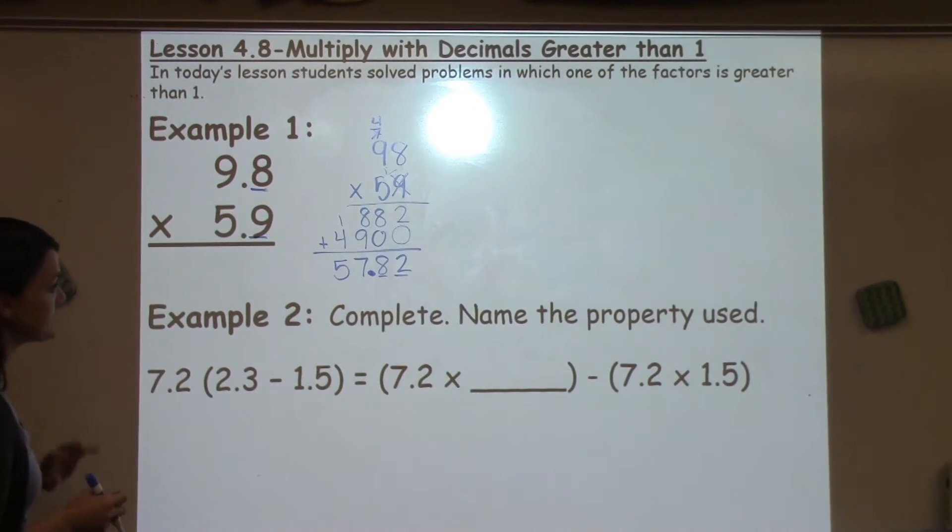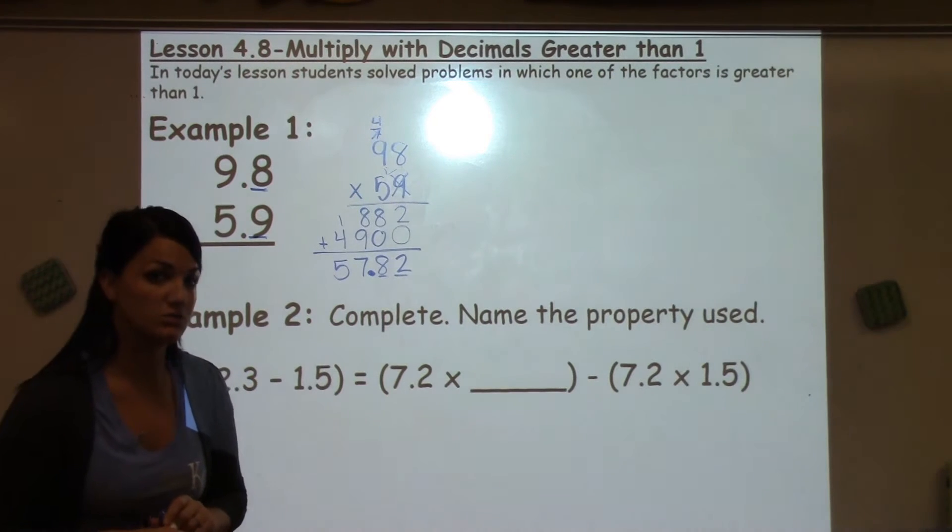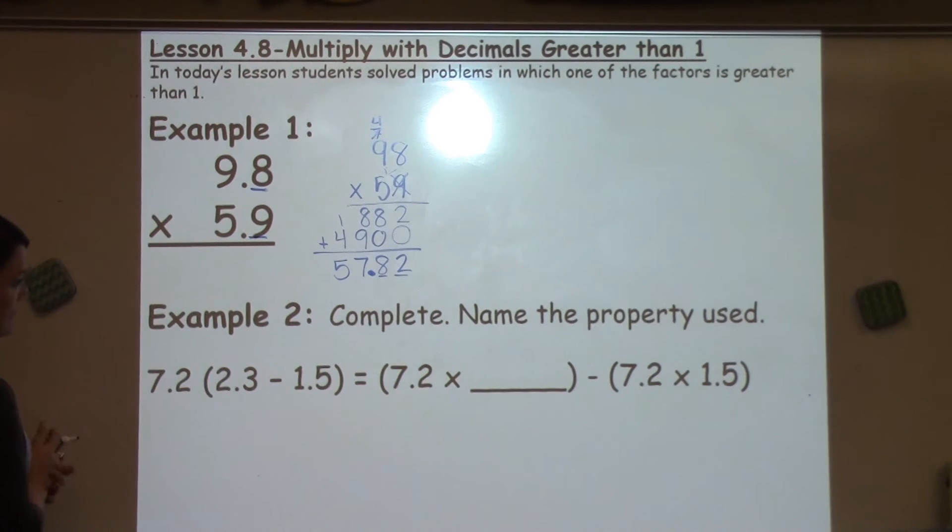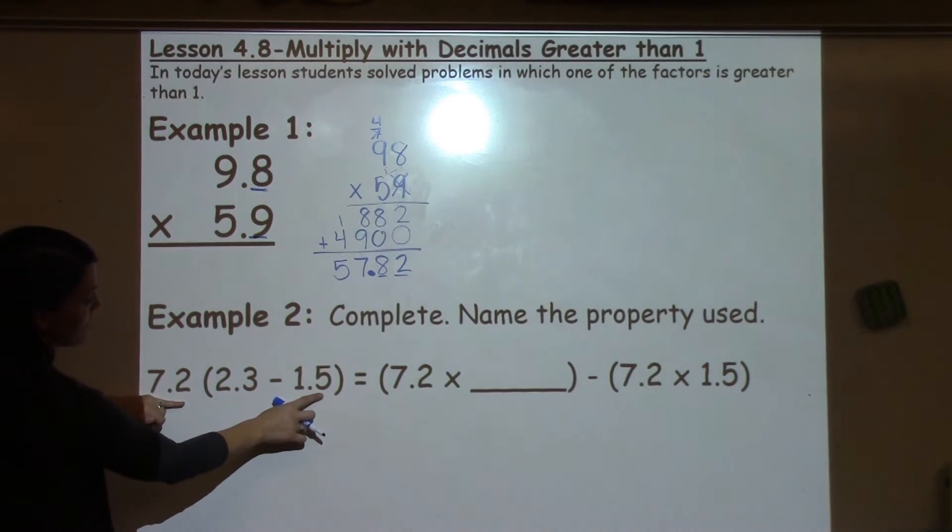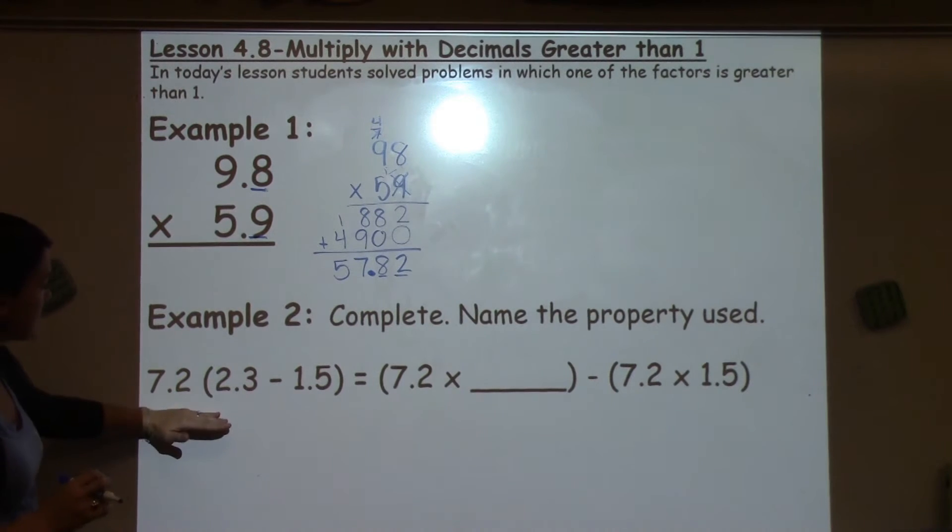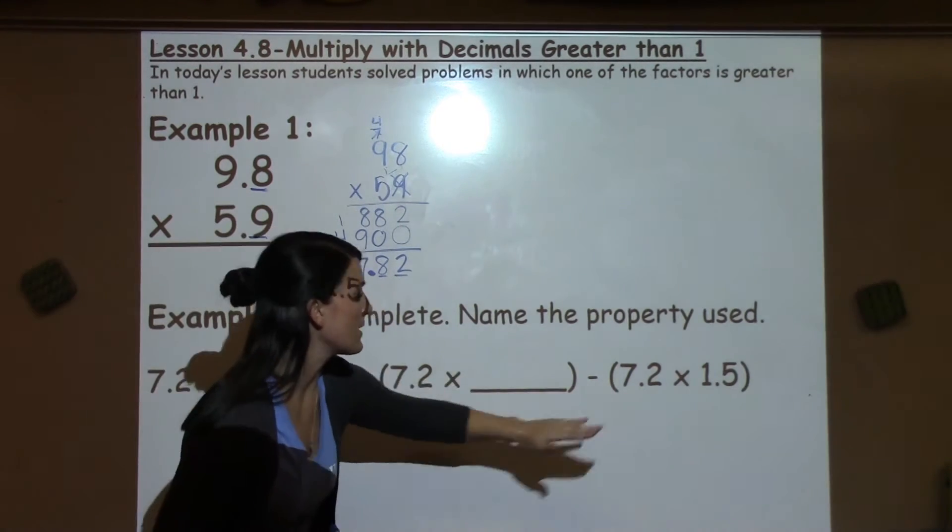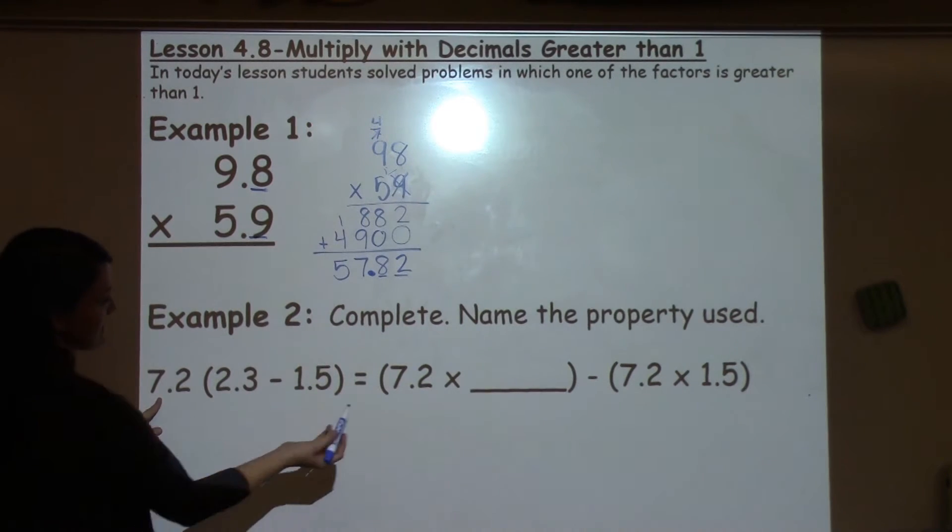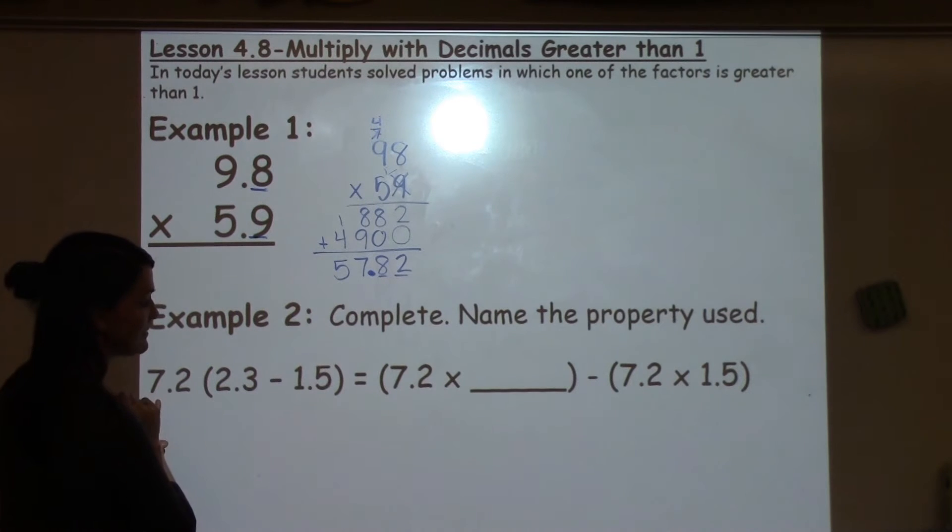Let's take a look at example two. It says to complete the problem and also name the property used. When I'm looking at this problem here, I see that I've got 7.2(2.3 - 1.5). So I see that it also shows me that equals two separate problems here: 7.2 times something minus 7.2 times 1.5.